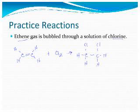Just as a practice, let's name this compound. We've got two carbons, they're all single bonded, so we're going to start with ethane. And then we've got two chlorines on adjacent carbons. The correct name of this product is 1,2-dichloroethane. Never hurts to review organic nomenclature.